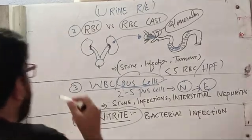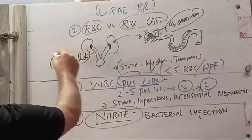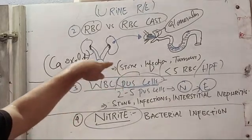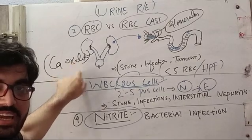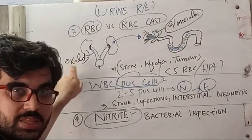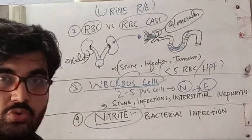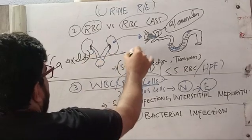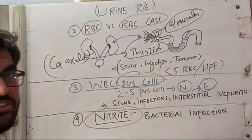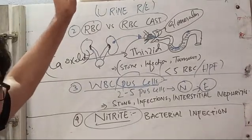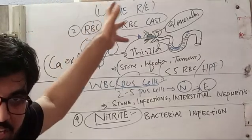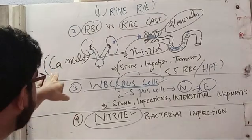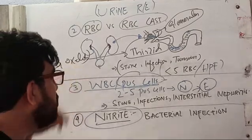If there is calcium oxalate in the urine, there is a possibility of stone formation in the kidney. If this patient is hypertensive, you must add thiazide diuretics, because thiazide diuretics reabsorb calcium back into the blood, so less calcium comes out in the urine, leading to decreased stone formation. If the patient has a problem with stones, you should also look at the urine pH.